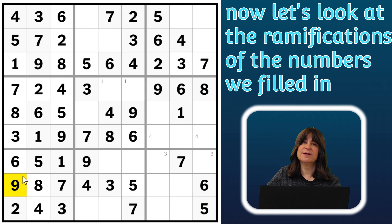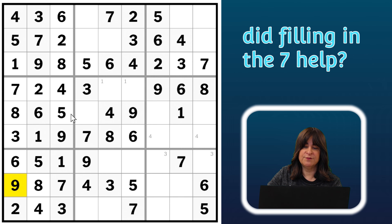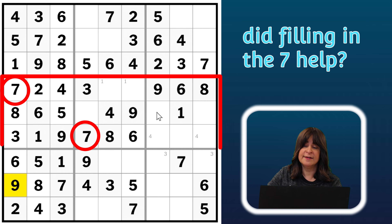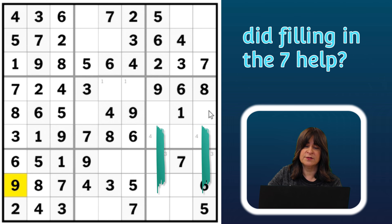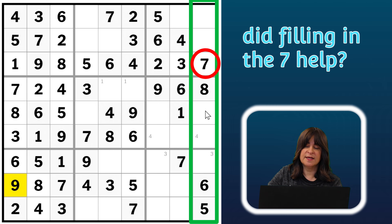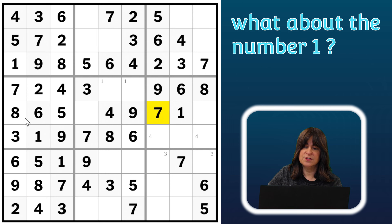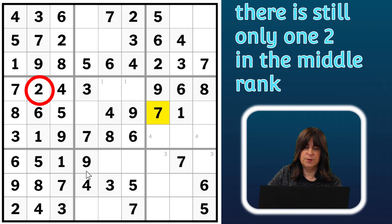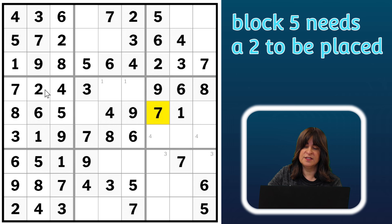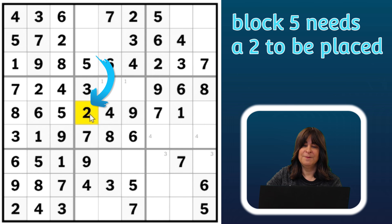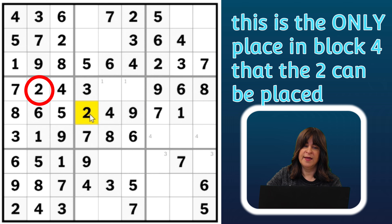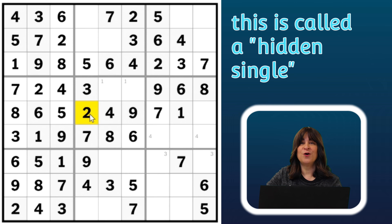Now let's go back and see if any of the numbers we just filled in can help us fill in other numbers. What about the seven? Now we have two sevens in the middle rank, and the third seven can go into either of these two cells, but since there's already a seven in this column, the seven has to go here. One — we still can't figure out which of these cells is a one; it could be either cell. Two — there's only one two. But wait: this block needs a two, and the only place a two can go in this block is here — because the two can't go in this row since there's already a two in the row. This, by the way, is called a hidden single.